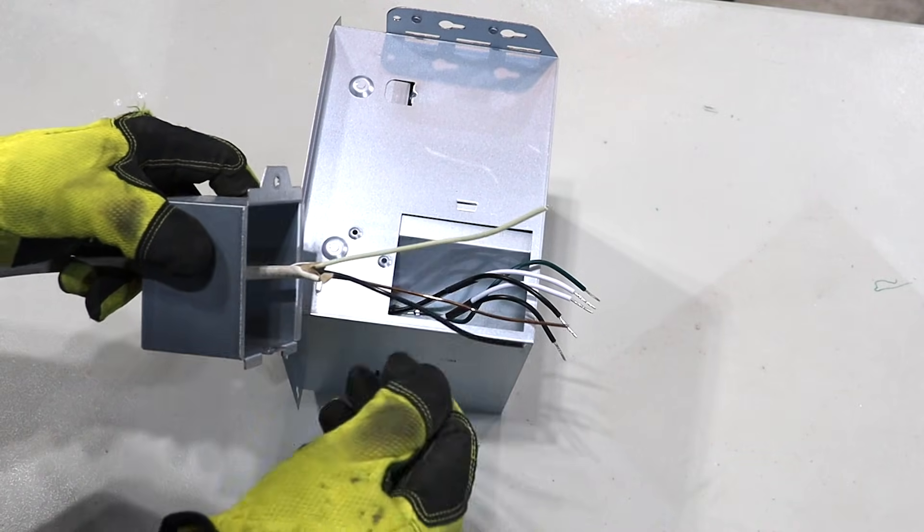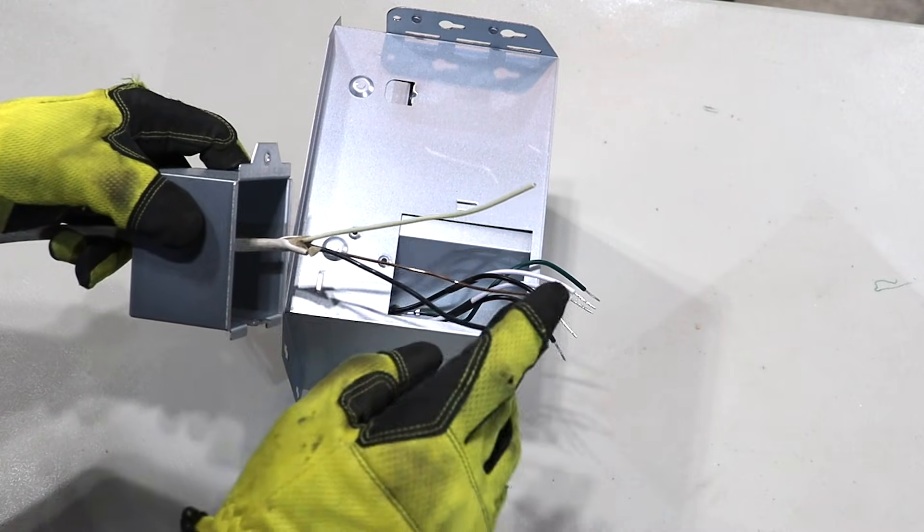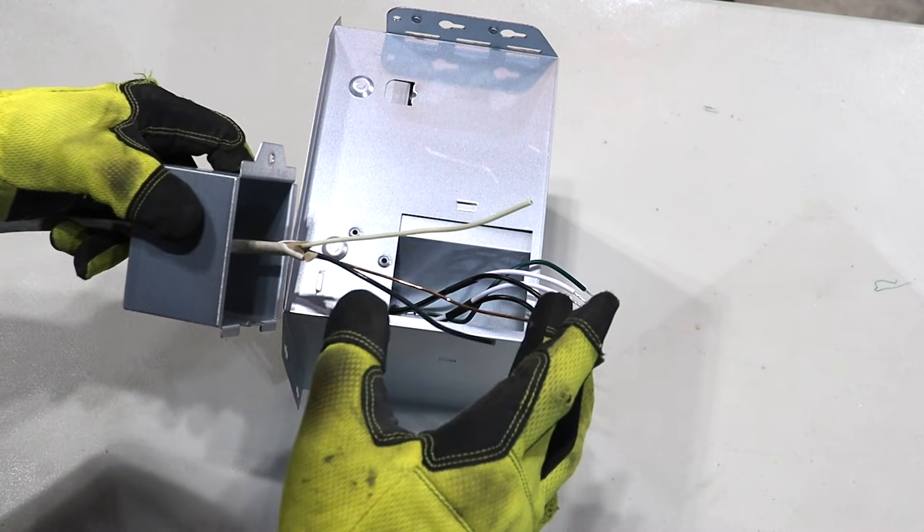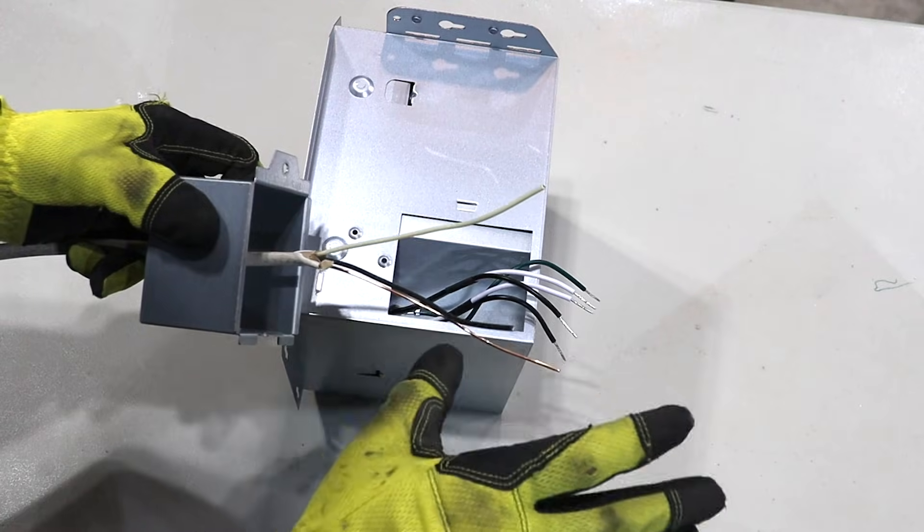So we have 14 gauge wire. This is 14 two wire as there's two conductors. The ground doesn't count as a conductor. It's not technically part of the circuit.